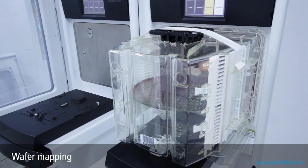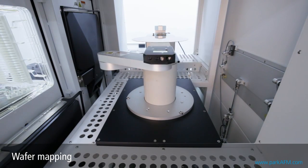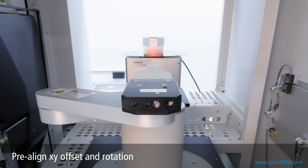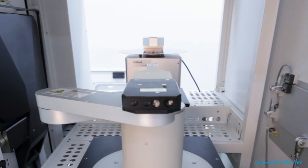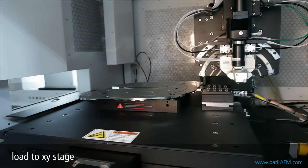In the 300mm equipment front end module, a wafer taken from the front opening unified pod is automatically mapped, then aligned for XY offset and rotation error through a pre-aligner. The aligned wafer loads automatically onto the XY stage of the AFM system.